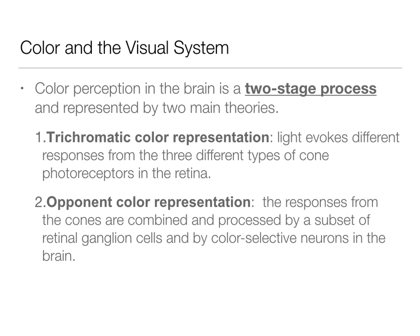The second one we're going to talk about in this lecture is the opponent color representation. There's a subset of retinal ganglion cells and selective neurons that are responding opponently. If you think back to opposites from elementary school art class — red versus green — that's kind of what we're talking about now, that these have opposites.